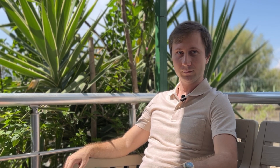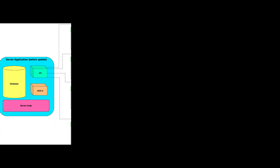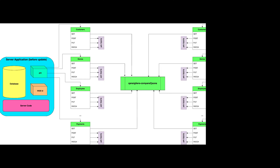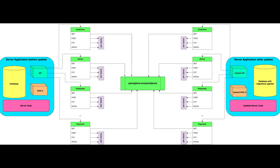In my case, I found a simple solution — you just need to download and install my library. Here's how it works: you take two versions of your application. The first version is your application and database before any major update. The second version is the updated application with the same database with migrations applied. You just need to dump objects from each API endpoint and compare them via my library.